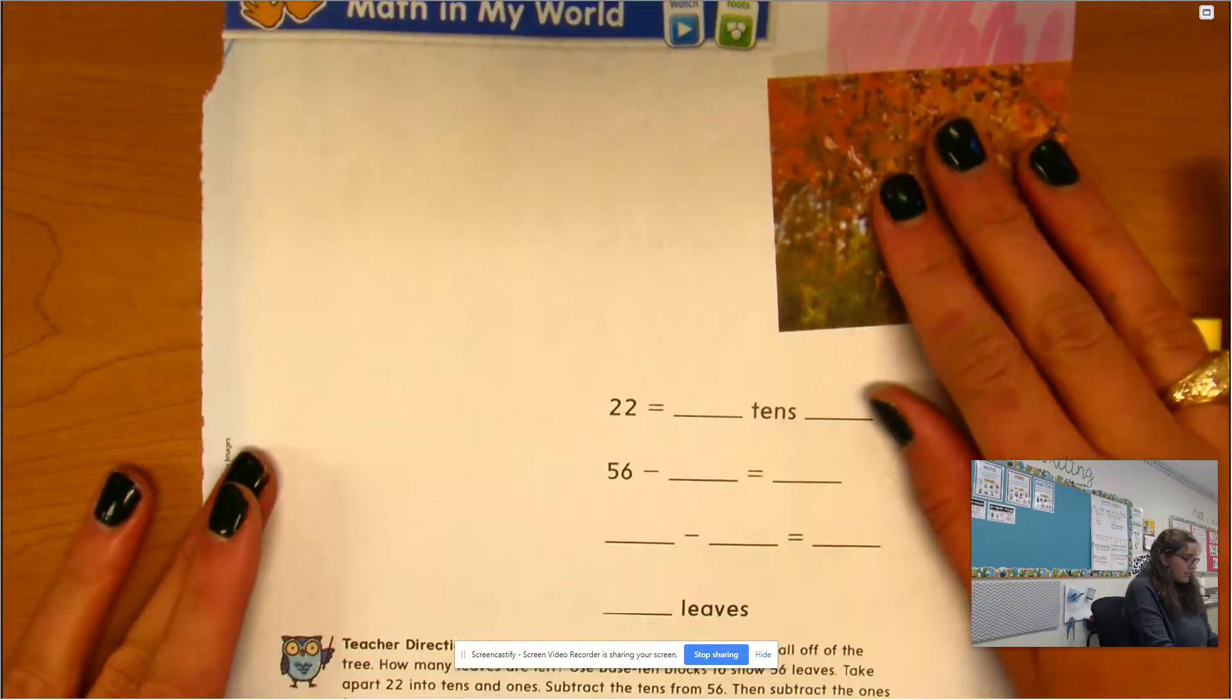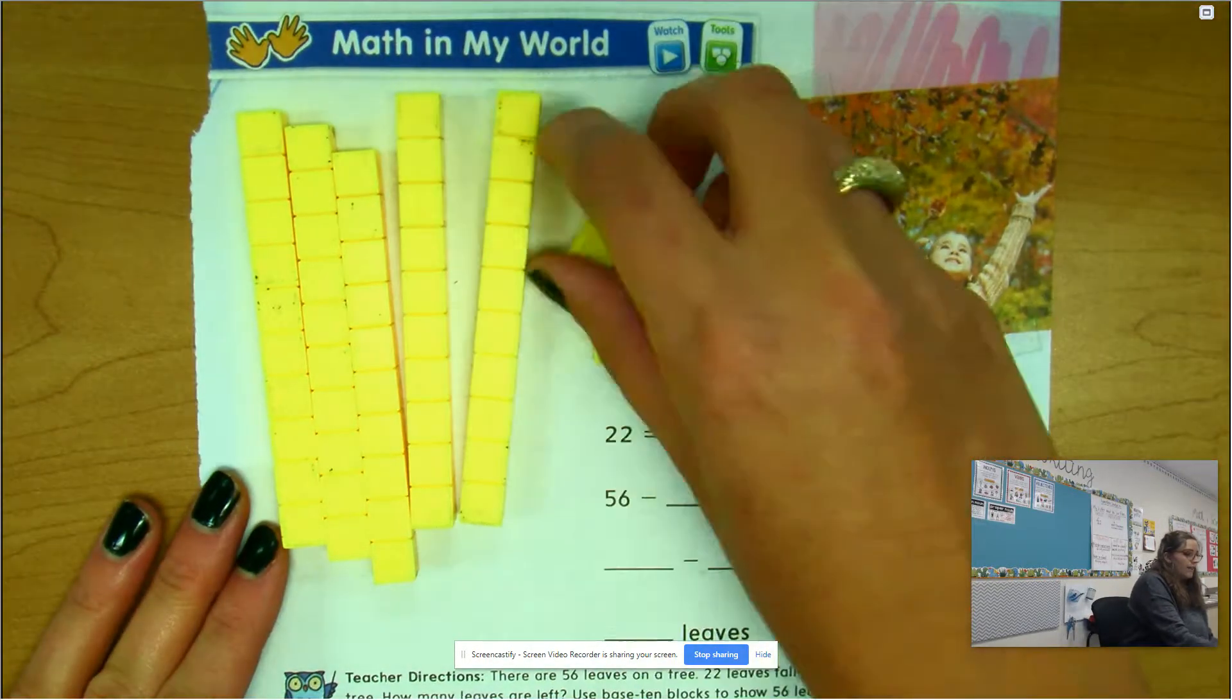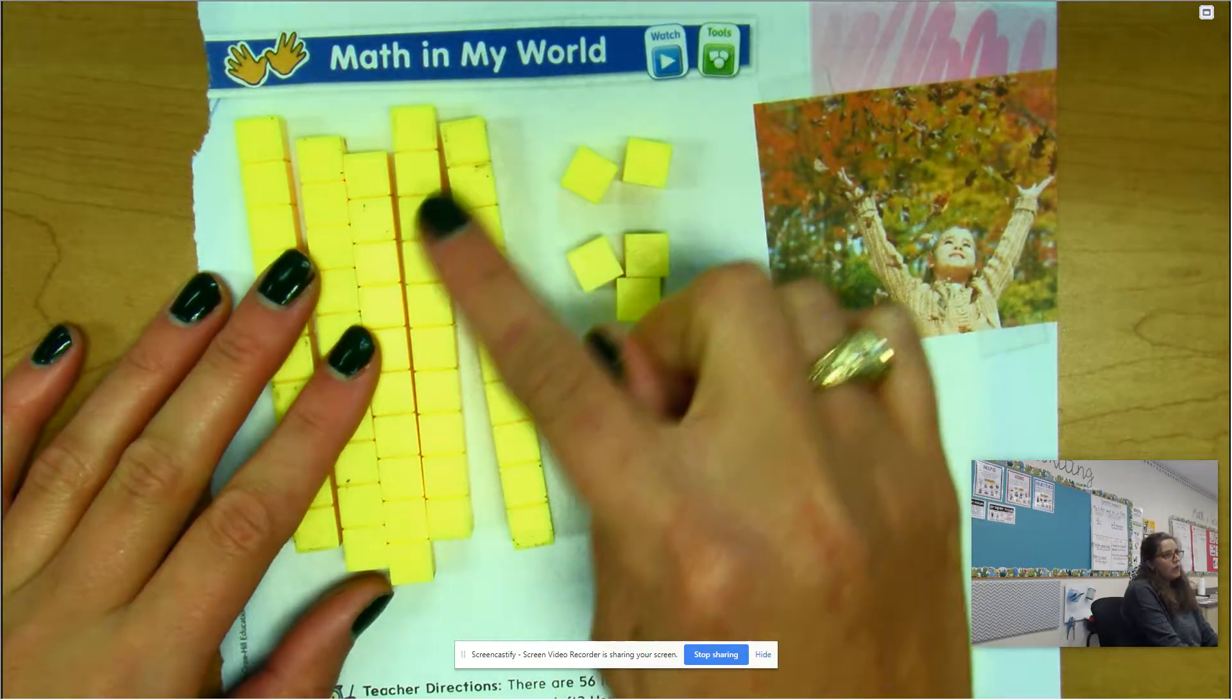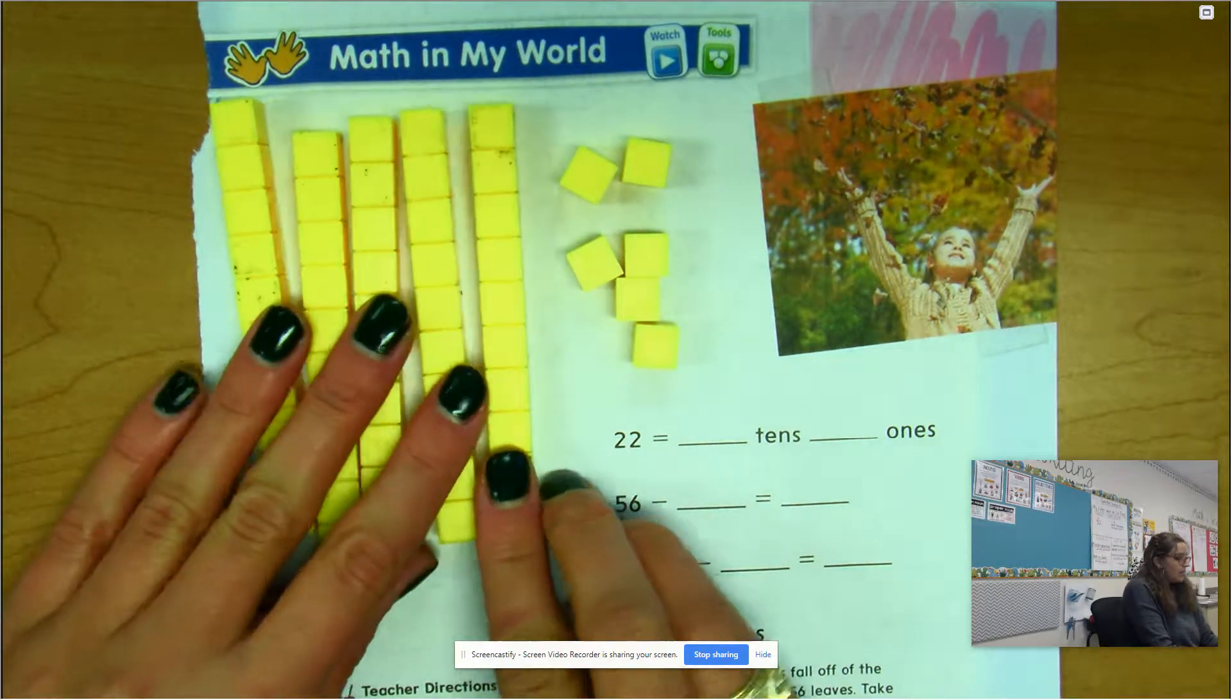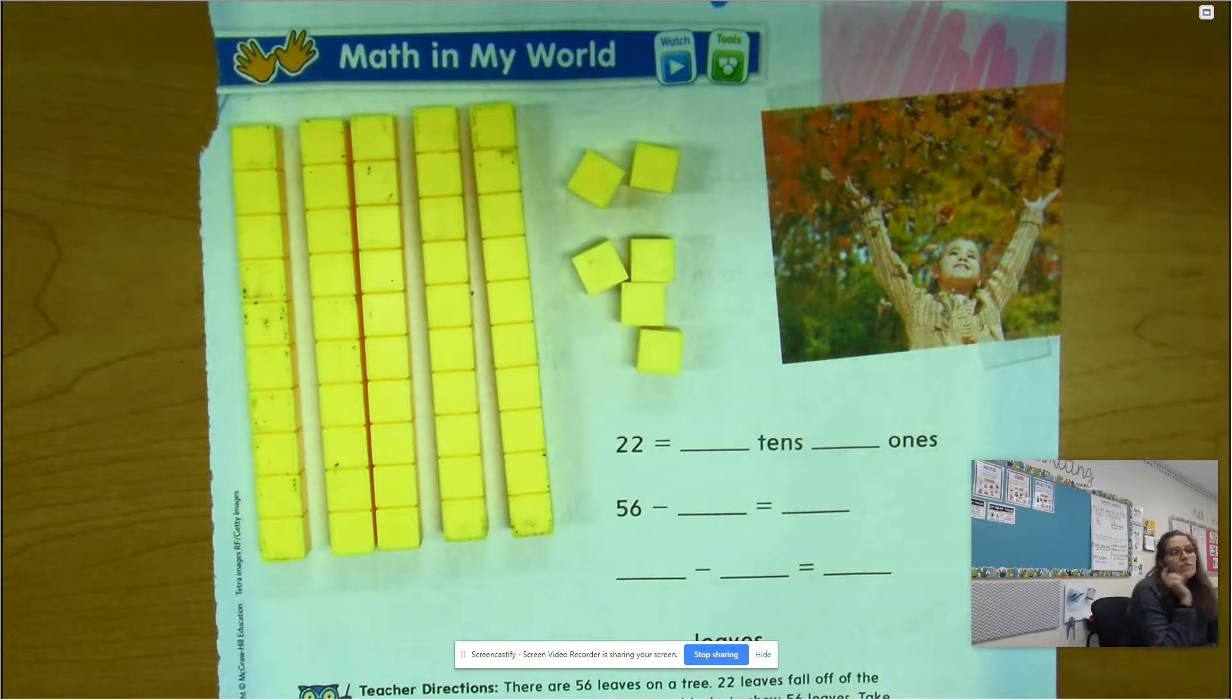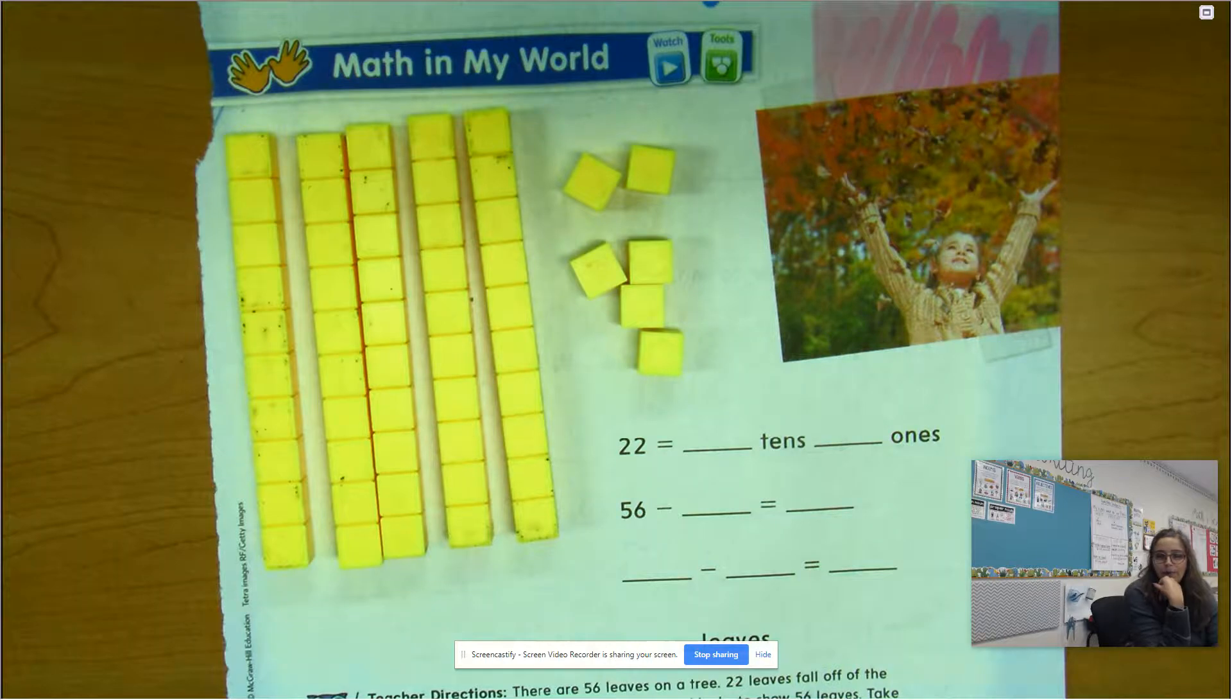a problem at the bottom that says there are 56 leaves on a tray. I'm going to show 56 just like that. If you want to draw rods and dots or sticks and dots to show your tens and ones, that would be good. Remember, we don't need to draw a whole rectangle with all the split up little cubes - you just draw one line for your tens. So we're going to demonstrate 56 leaves. 22 leaves fell off the tree, how many are left? Think about that strategy we talked about.